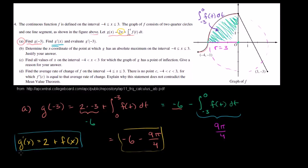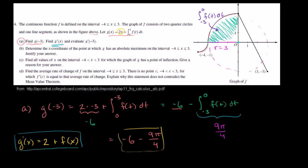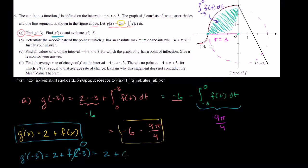Then we need to evaluate it at negative 3. g'(-3) is going to be equal to 2 plus f(-3). Let's look at our function definition — when x is equal to negative 3, our function is at 0. So f(-3) is just 0. So it's just 2 plus 0, which is equal to 2. So g'(-3) = 2, and we're done with part A.